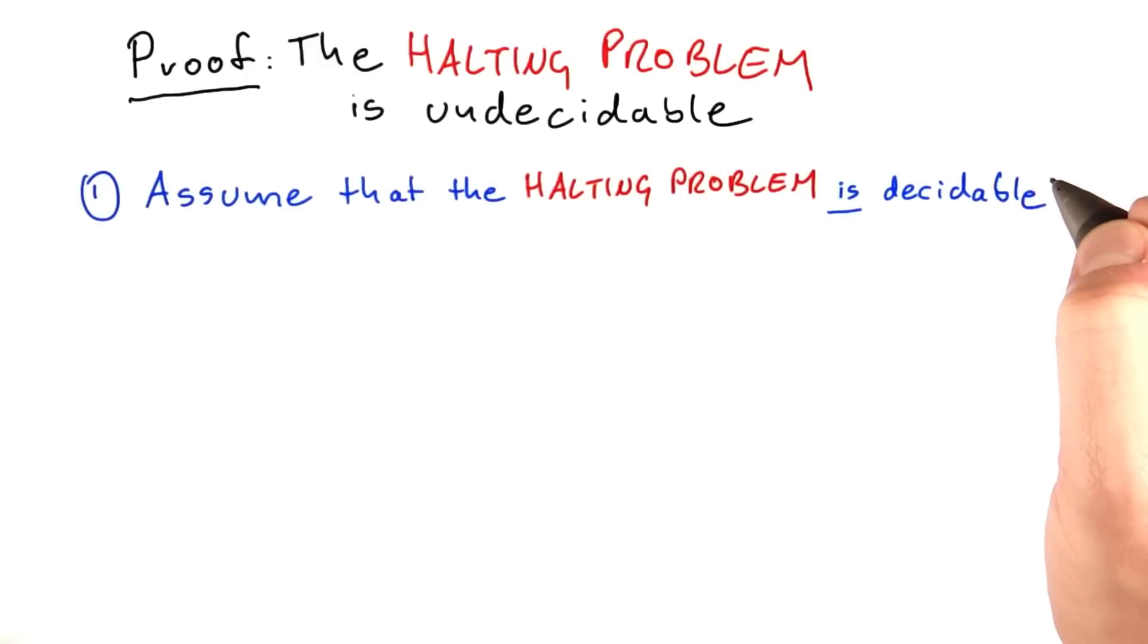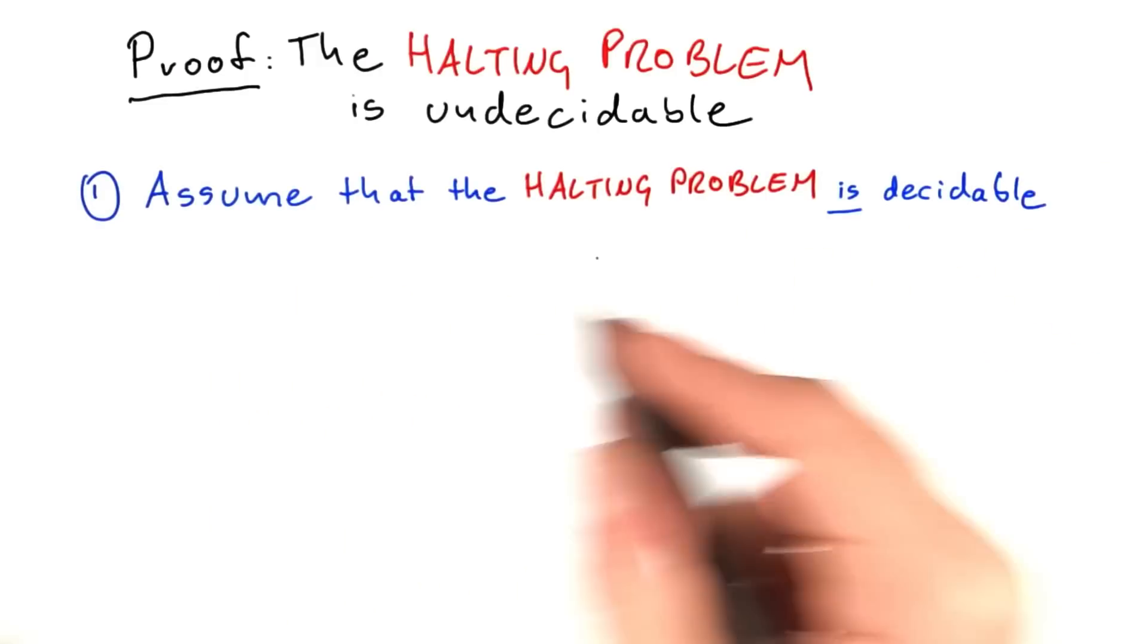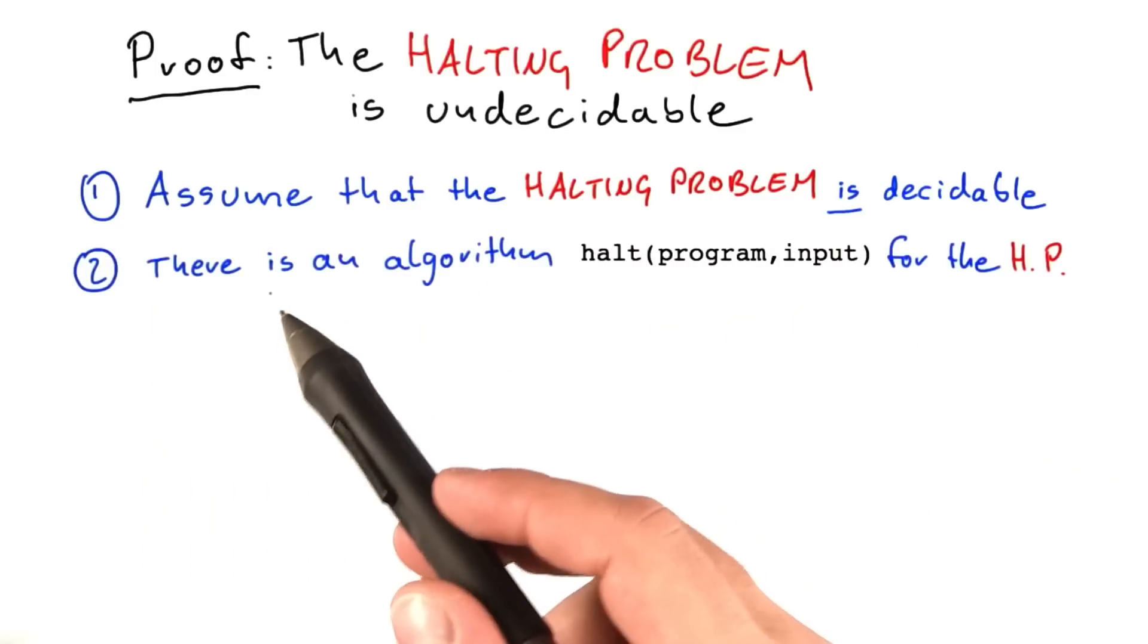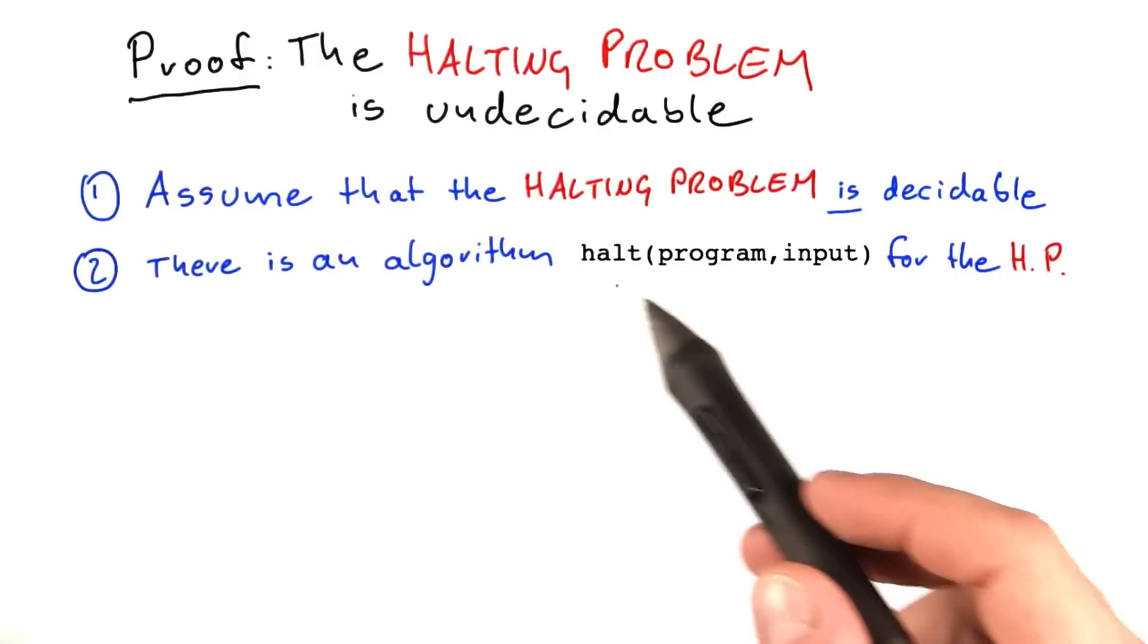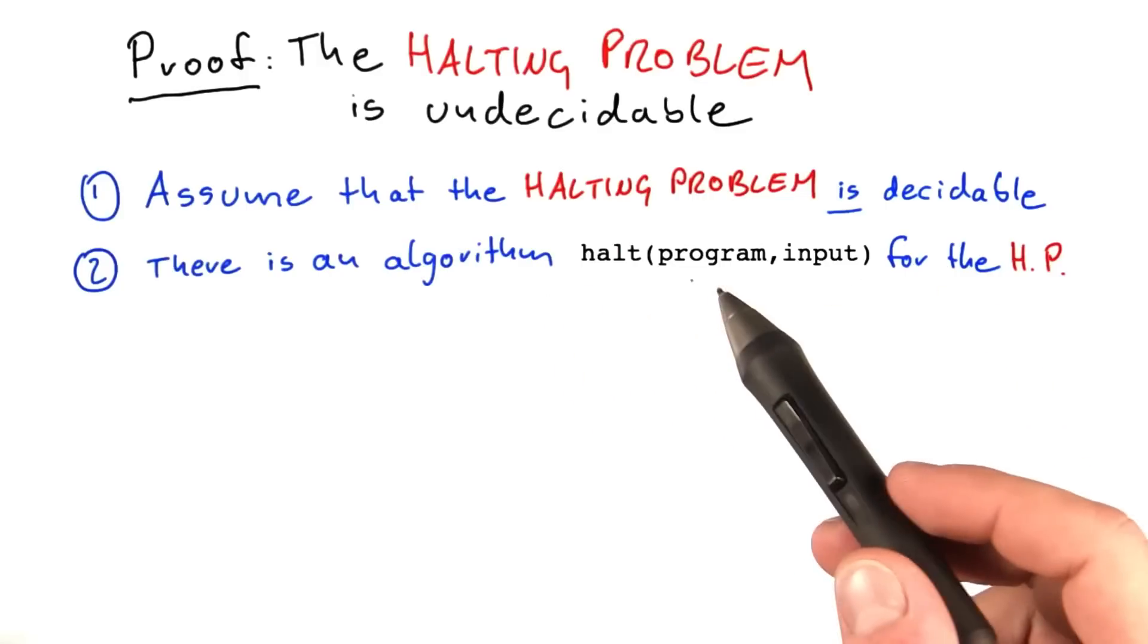So let's start out by assuming that the halting problem is in fact decidable. It follows directly from the assumption that the halting problem is decidable that there must be some algorithm for the halting problem. Now this algorithm can be very sophisticated, very complicated, whatsoever.